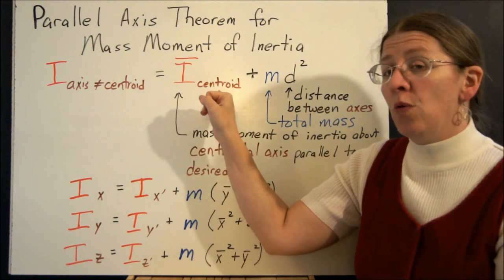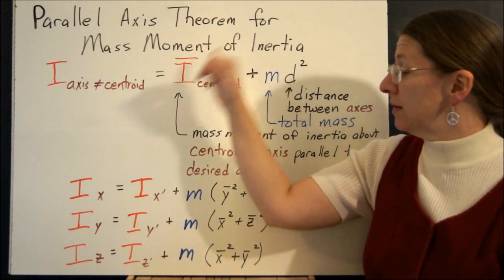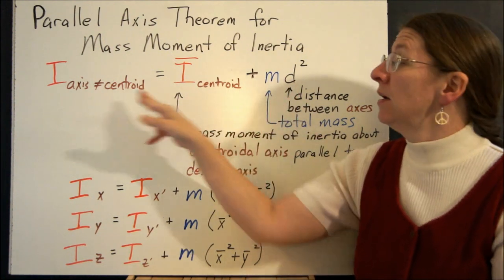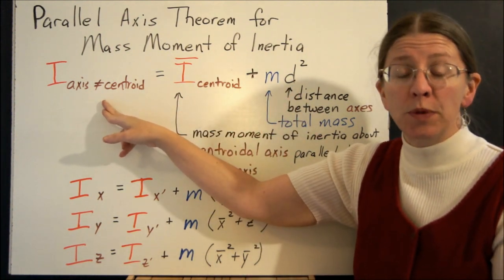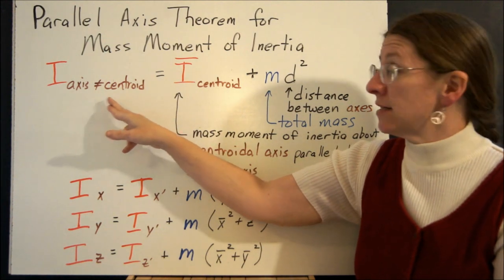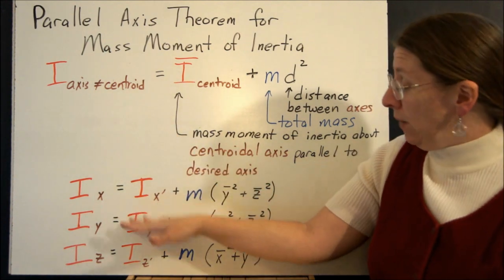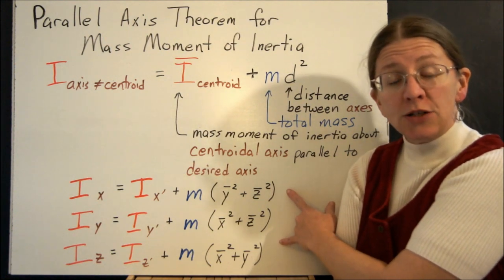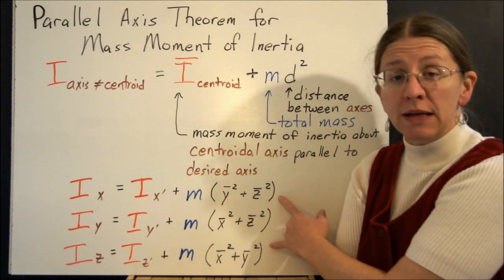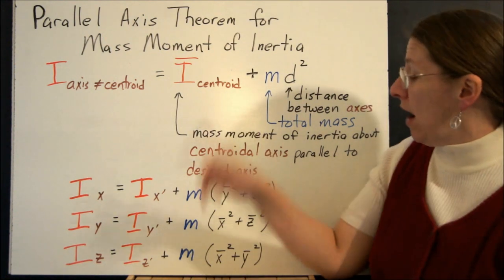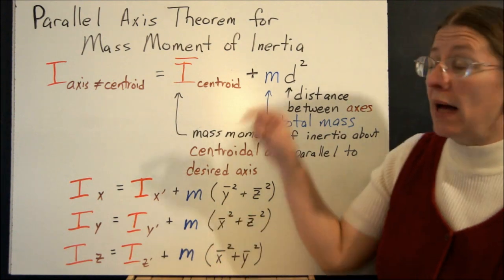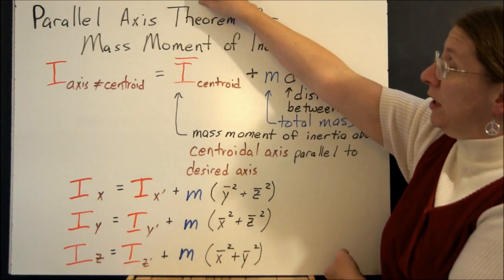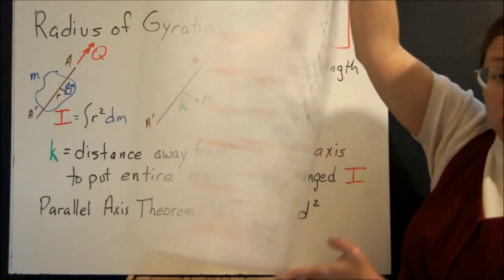As soon as we know what these centroidal axes are, we can set up a chart or anything else to find out what the mass moment of inertia is about an axis that's not equal to the centroid. And we can do this in Cartesian form using these same Pythagorean relationships that we had with the x, y, and z coordinates of our object. m is the total mass of your object. So we're going to use that parallel axis theorem in all of our charts.